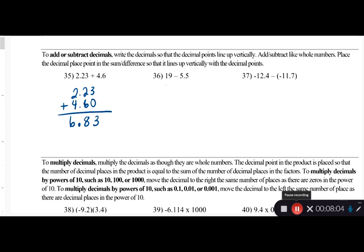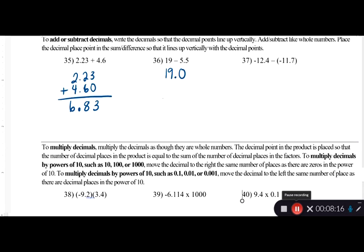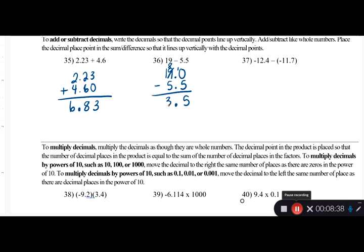Same idea with 19 minus 5.5. Every whole number has a decimal on the end, so 19 is the same as 19.0. Write the decimal in the answer, then subtract: zero cannot subtract five, so borrow — make it ten, ten minus five is five, eight minus five is three, one minus zero is one. Answer: 13.5.